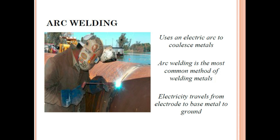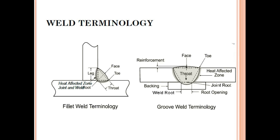Arc welding uses an electric arc to join material. It is the most common method of welding metals — commonly used for boilers, pressure vessels, and heat exchangers using SMAW. Electricity travels from the electrode to the base metal, and then from the base metal to ground.